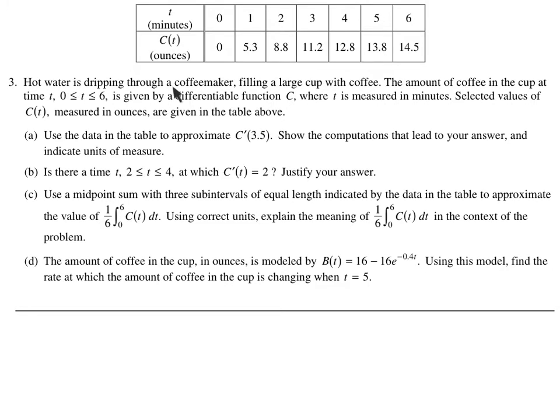Hot water is dripping through a coffee maker, filling a large cup of coffee. The amount of coffee in the cup at times 0 to 6 is given by a differentiable function C. That differentiable word means it's also going to be continuous. This is also continuous. Function C, where T is measured in minutes. So we've got minutes here.